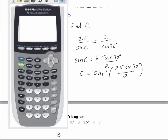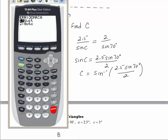So let's try to evaluate this on our calculator. My calculator is in degree mode because I want my answer to be in degrees. I'm going to take inverse sine of 2.5 sine of 70 degrees, close the parentheses, divide by 2, and then close the parentheses again. Hit enter.